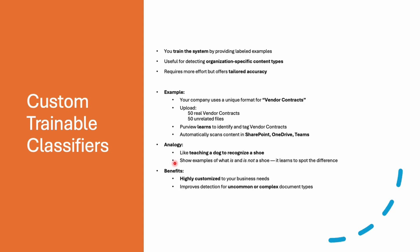With a custom trainable classifier, you teach and train the system yourself by giving examples. For example, if your company uses a unique format for vendor contracts, you upload 50 real vendor contracts and 50 non-matching files, and the model learns how to recognize your vendor contracts. It will automatically find similar documents in SharePoint, OneDrive, or Teams and tag them. It's like teaching a dog to recognize your shoe — show it 10 real shoes and 10 non-shoes and it learns to differentiate.